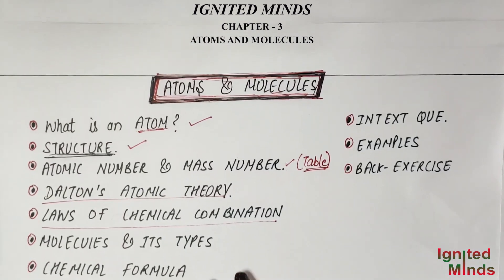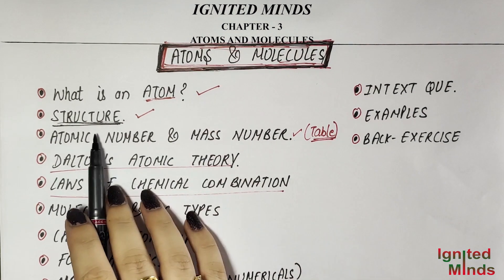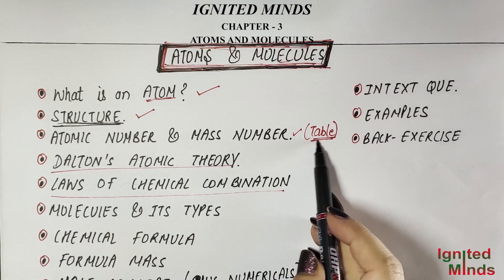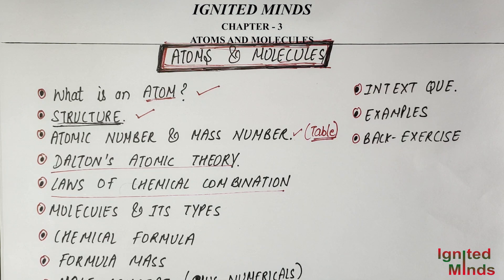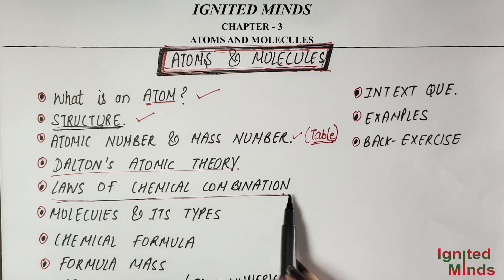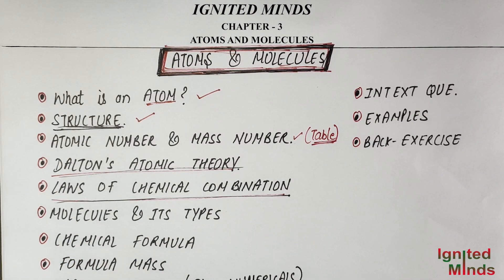Hello students, this is Prachi, welcome to our channel. We are doing Class 9, Chapter 3, Atoms and Molecules. In the last video we studied about atoms, structure of atoms, atomic number, and mass number with a table. If you haven't seen that video, the link will be found in the description. Now we are going to study the Law of Chemical Combination, and after that we will study Dalton's Atomic Theory. Let's start.